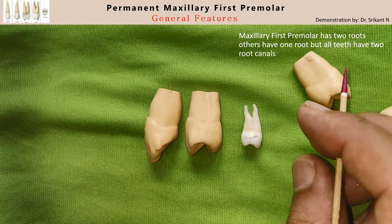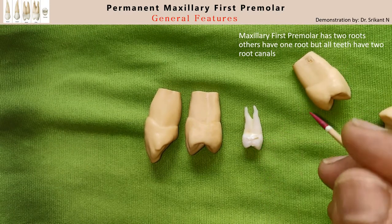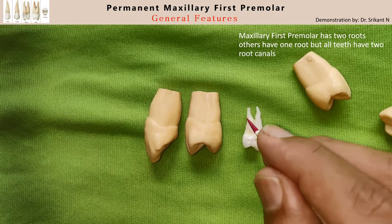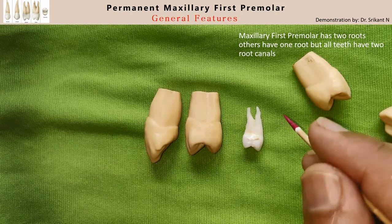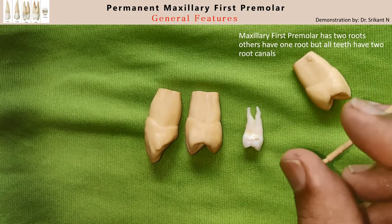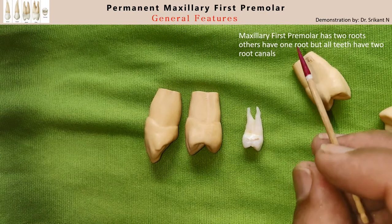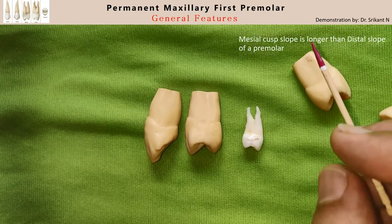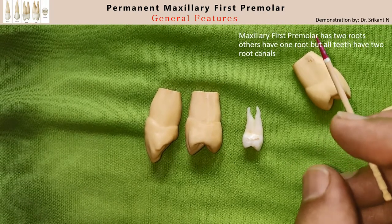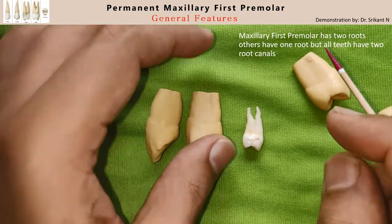The premolars generally have one or two roots. The maxillary first premolar has two prominent roots — one buccal and one lingual — whereas the mandibular premolars have a single root. However, all of these seem to have two root canals internally.